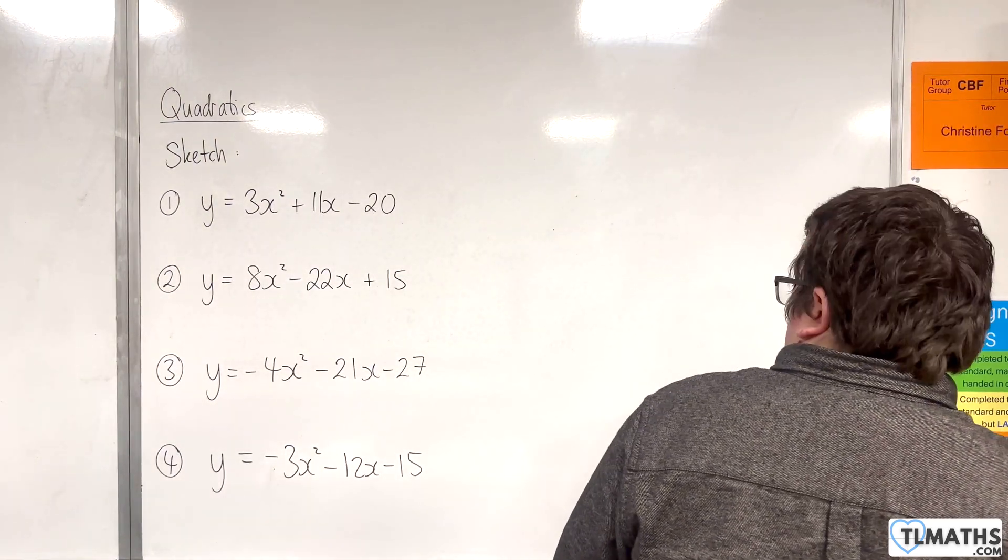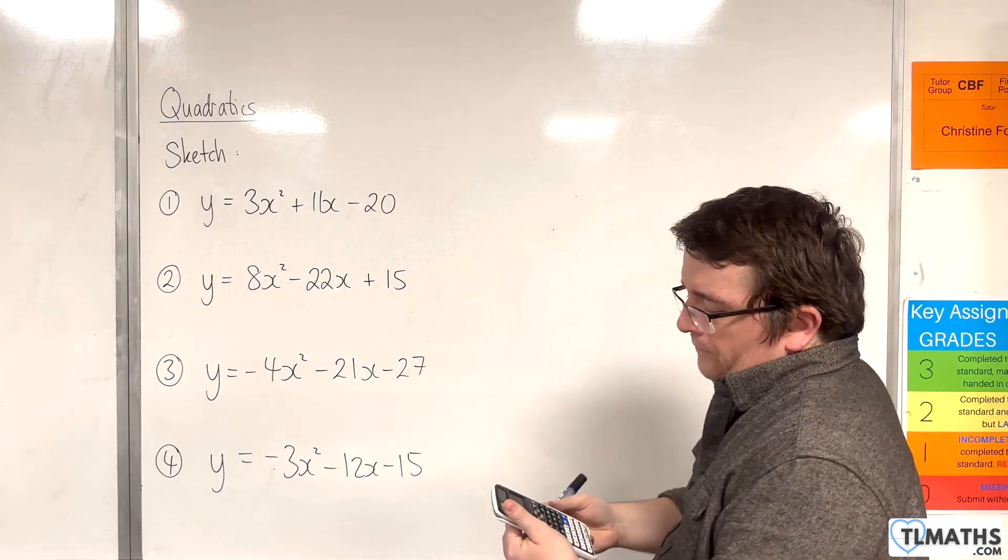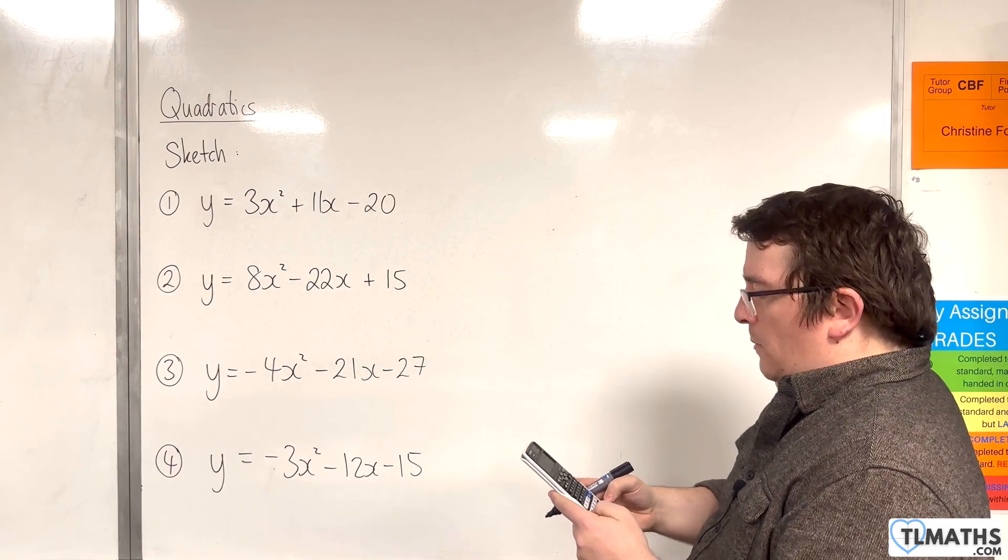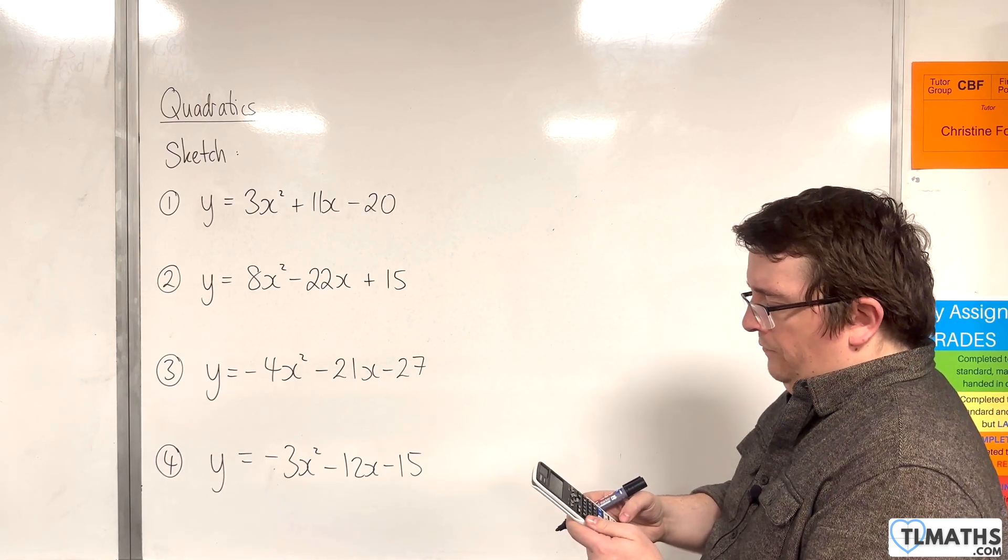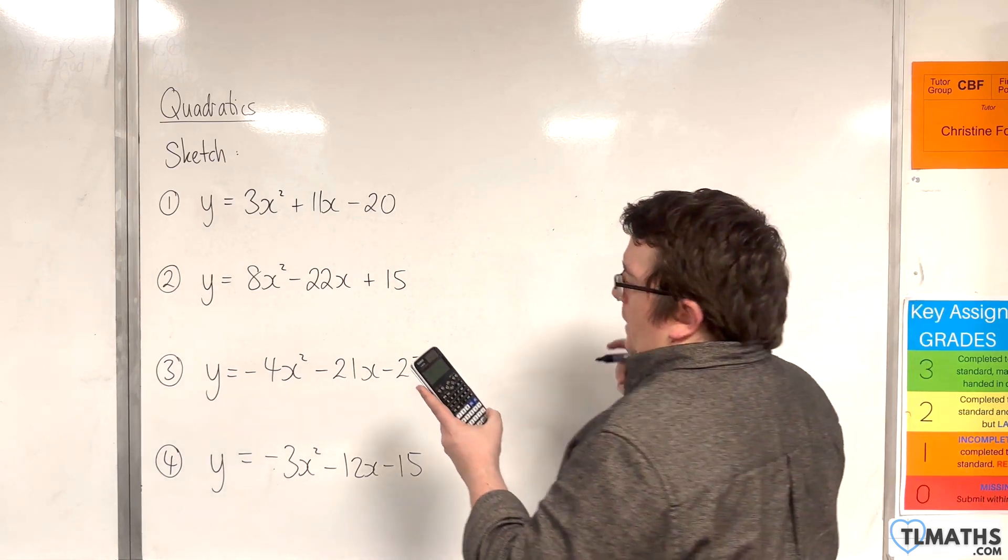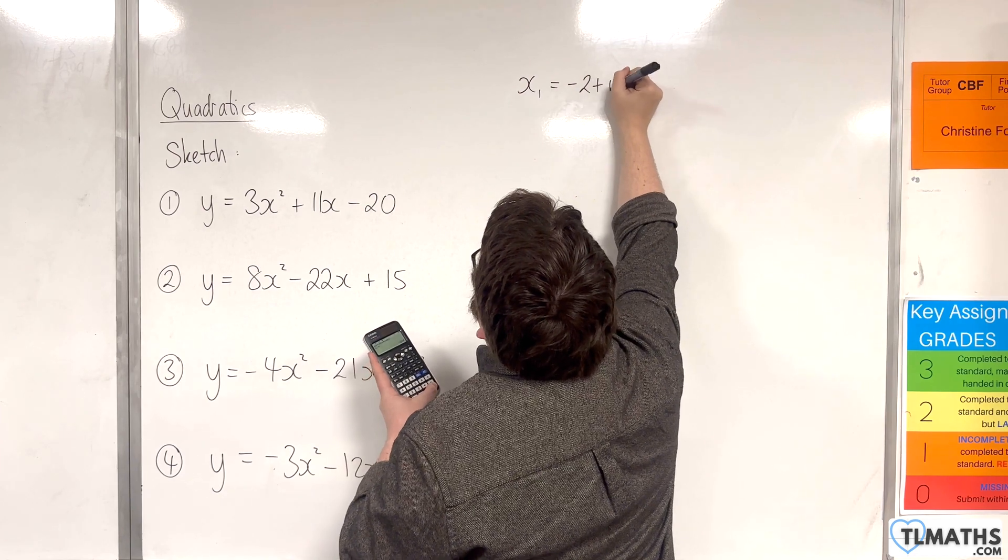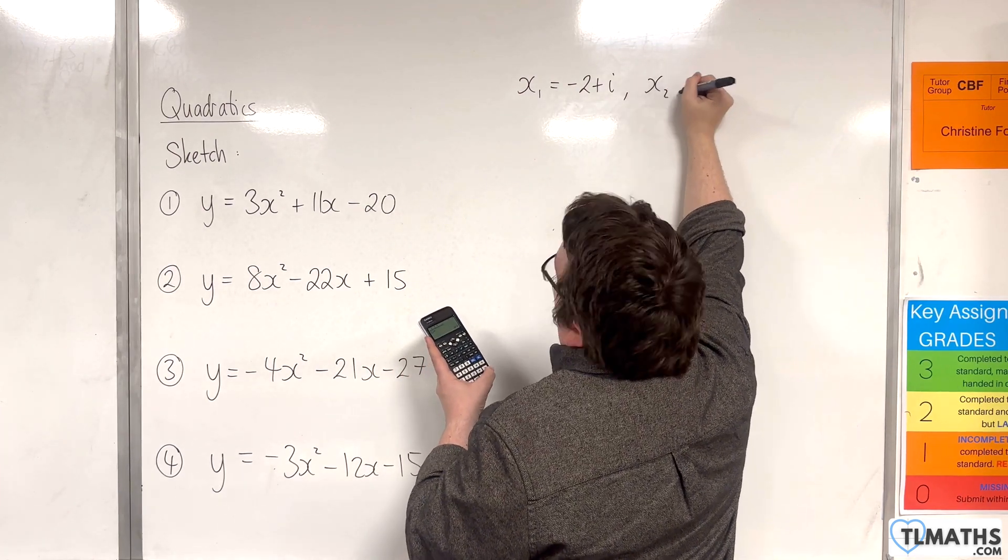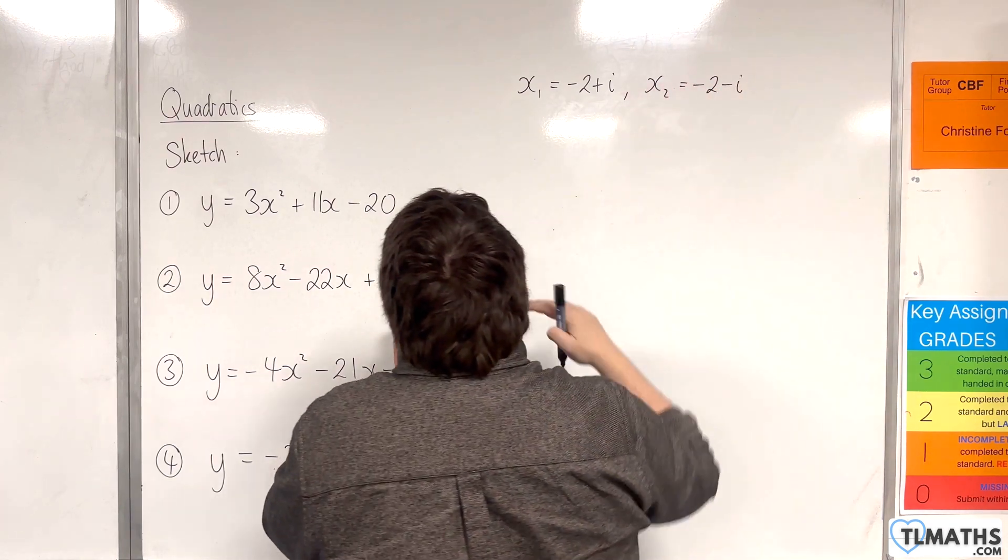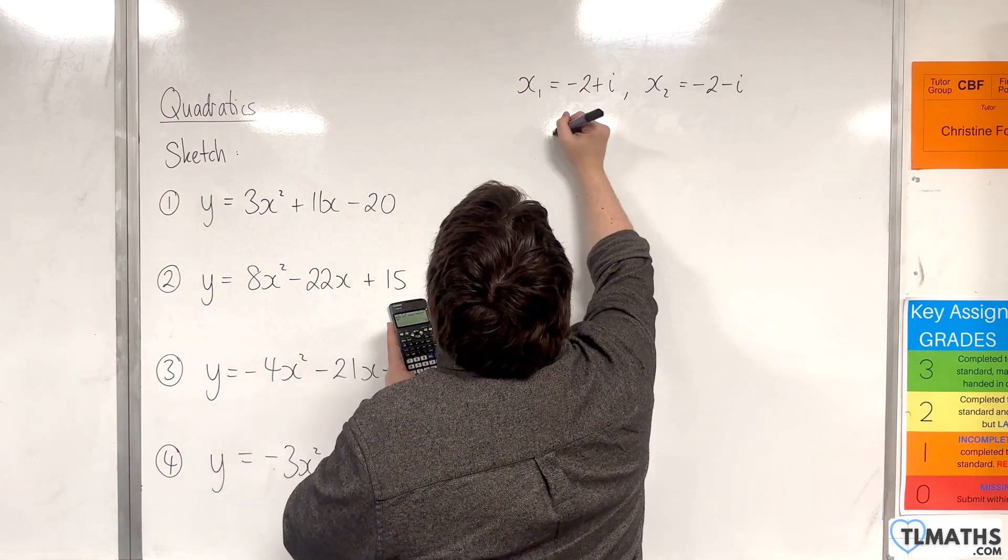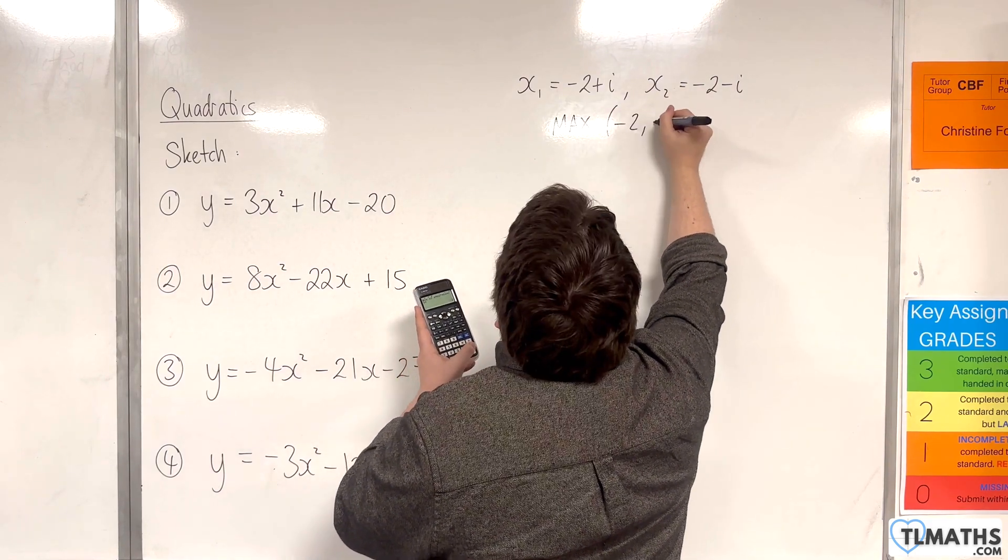Number 4: y equals -3x² - 12x - 15. I'm going to plug in -3, then -12, then -15. Now, my calculator is telling me that x₁ is -2 + i, and x₂ is -2 - i. I'll discuss those in a moment. The maximum point, it tells me, is -2, -3.